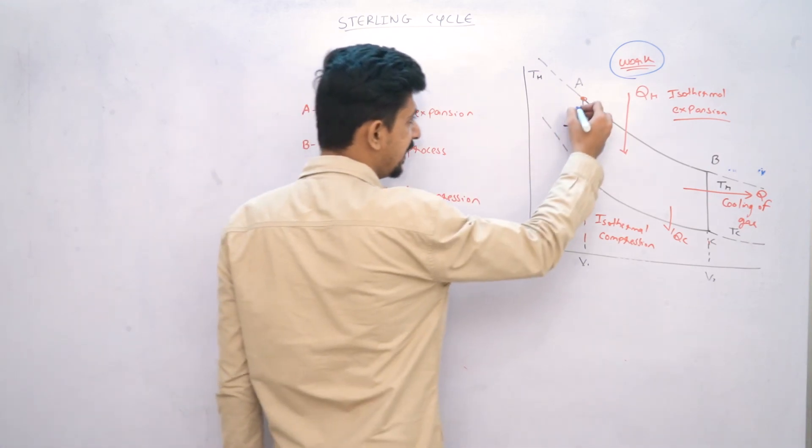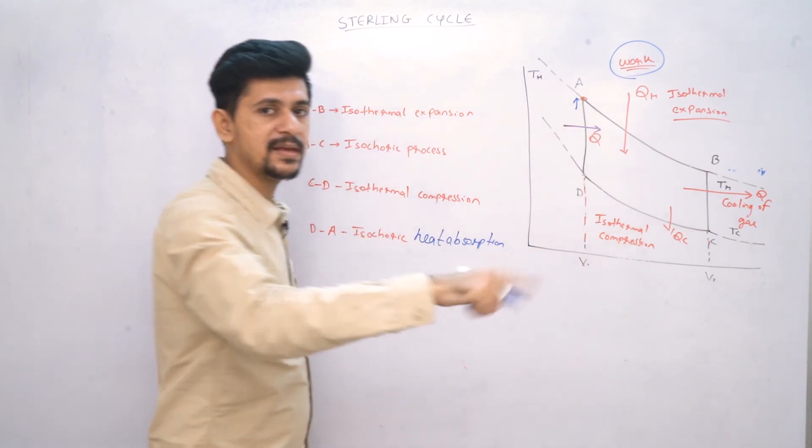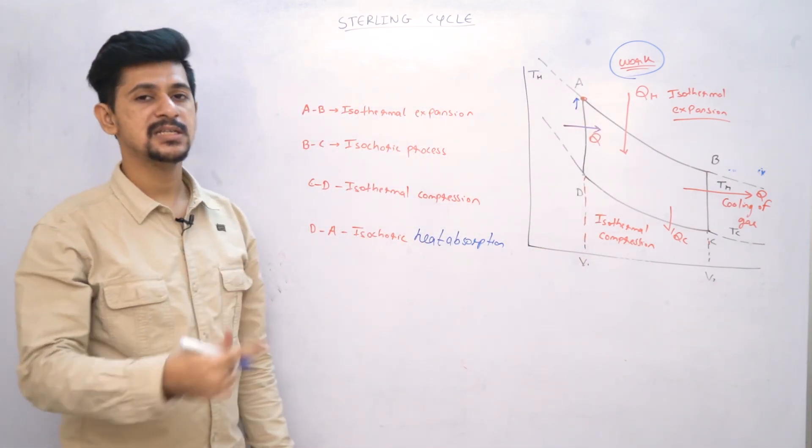And again we come at point A from where you can repeat the cycle again. So this is the Sterling cycle.